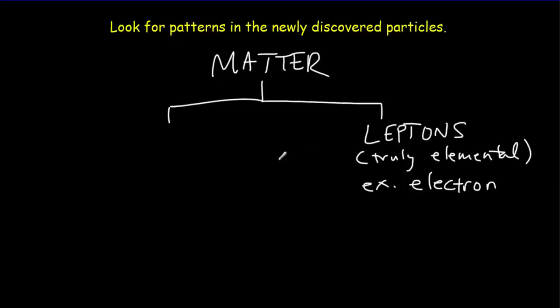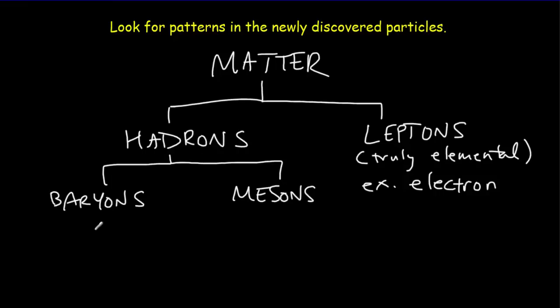The other major class of particles was called the hadrons. There's two types of hadrons: there's baryons and there's mesons. A classic example of a baryon would be a neutron or a proton.